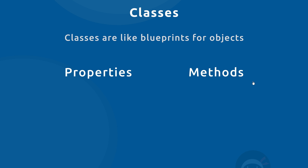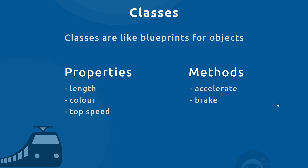So when I say methods it's kind of interchangeable with the word function. A class describes what properties an object should have and also what methods it should have. Going back to our train analogy, the properties could be something like the length of the train, the color of the train, or the top speed — things that describe it. The methods or functions of that train would be to accelerate so it can move, or to brake — the things it can do.